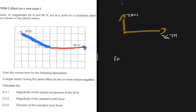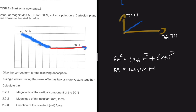Using the formula: FR² = 36.7² + 25². Taking the square root of both sides gives us a resultant of 44.41 newtons. That is the magnitude of the resultant net force.